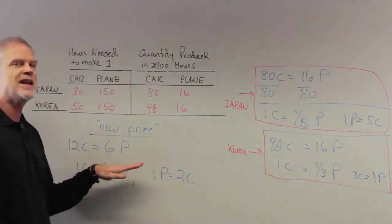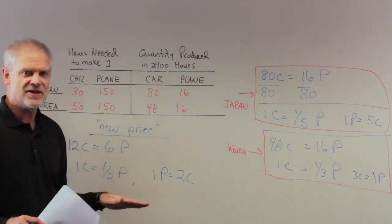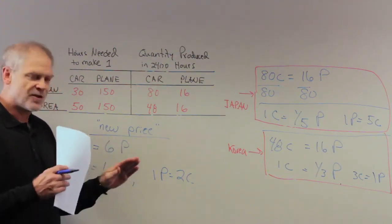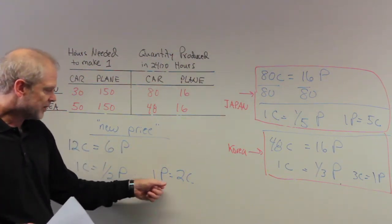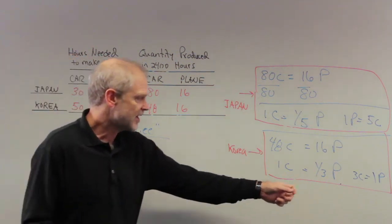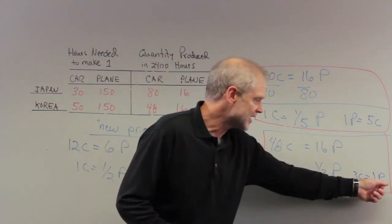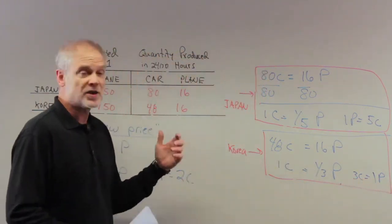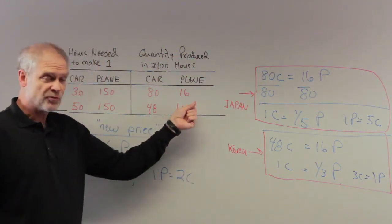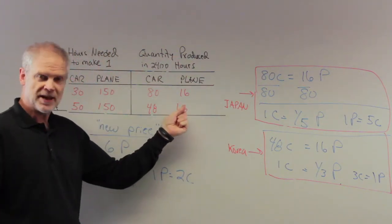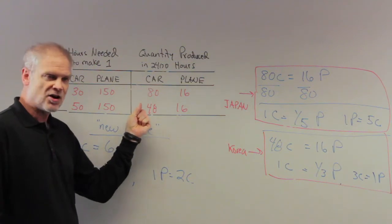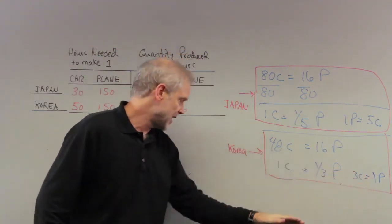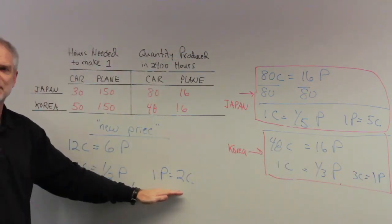Whereas before they specialized, they could get three cars for their plane. So for Korea, this new trading price is really disadvantageous. It doesn't work for them, they're not going to trade because, again, one plane is only buying two cars with this price and their own internal price of one plane for three cars. What Korea would do would start taking resources and labor away from planes, putting it back into cars and they do it themselves because the world price of cars is simply too expensive.